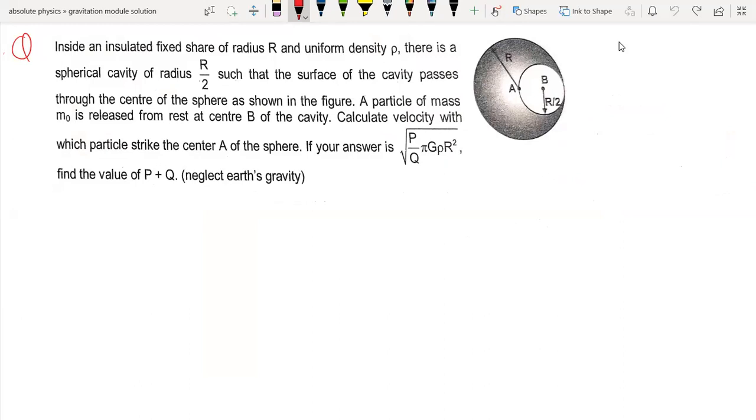The question is: inside an insulated fixed sphere of radius R and uniform density, there is a spherical cavity of radius R by 2, such that the surface of the cavity passes through the center of the sphere.